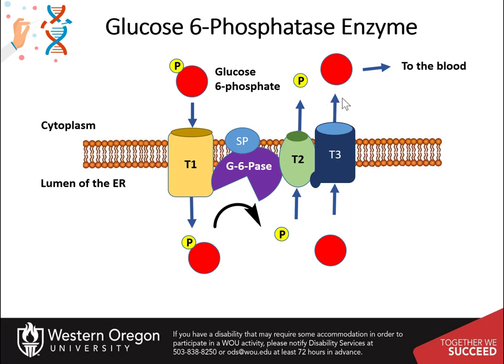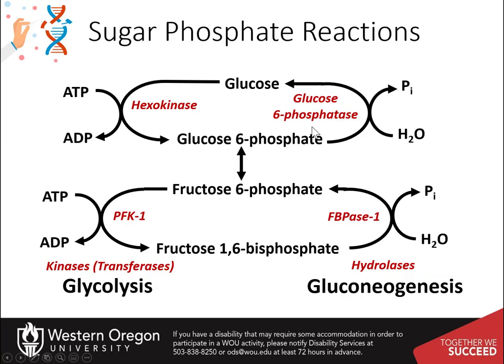Free glucose is then transported back into the bloodstream through a GLUT transporter, not shown in the diagram. The final two novel reactions in the gluconeogenic pathway are both hydrolase reactions, involving the hydrolysis of the phosphate group from the sugar. This is notable as it does not produce energy the way the reverse kinase reactions do in the second half of the glycolytic pathway.